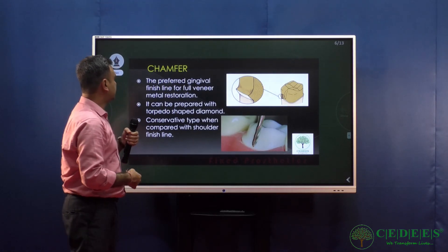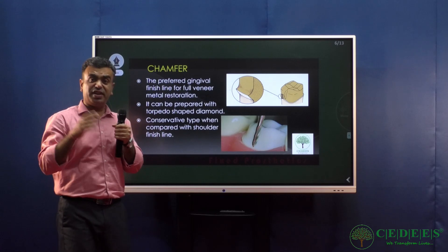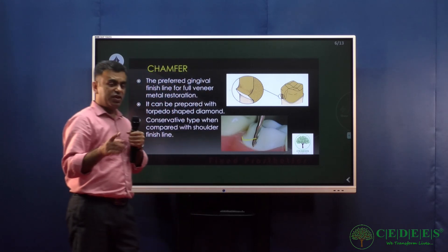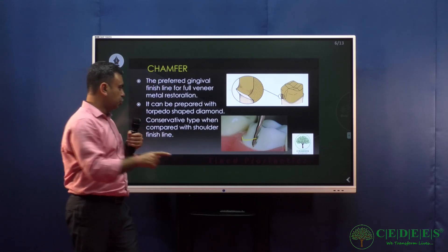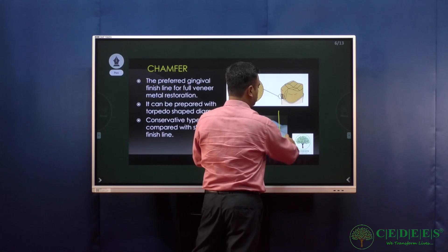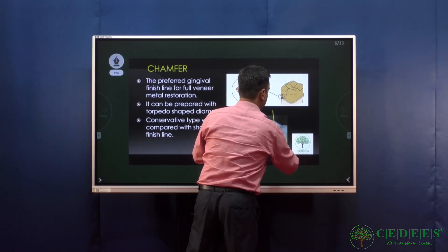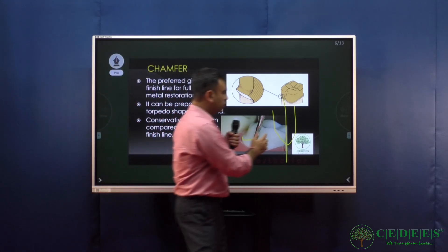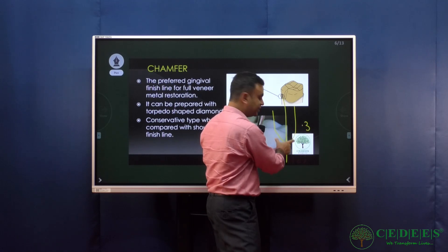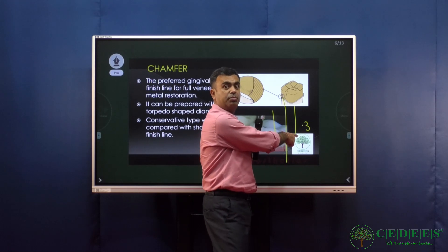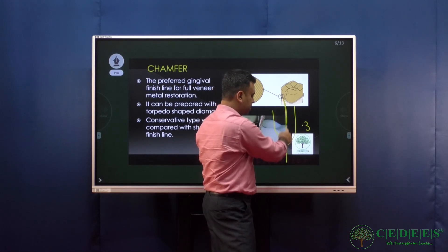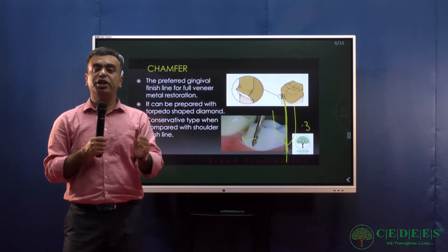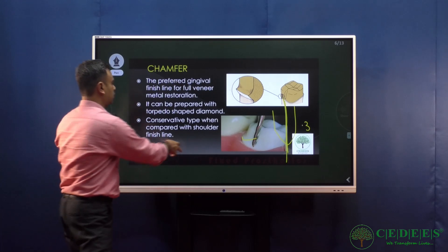A chamfer finish line is a conservative finish line with a rounded margin, prepared using a torpedo-shaped burr. An important rule: half the width of the torpedo-shaped burr determines the finish line width — so a 0.6 mm torpedo burr produces a 0.3 mm finish line. Chamfer is used wherever the finishing material is metal.